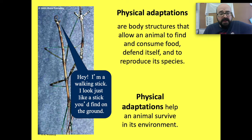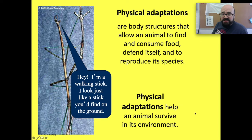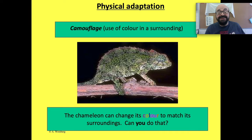There's a speech bubble here that says, 'Hey, I'm a walking stick. I look just like a stick you'd find on the ground.' The slide also says physical adaptations help an animal survive in its habitat. So how would looking like a stick help this particular animal to survive?